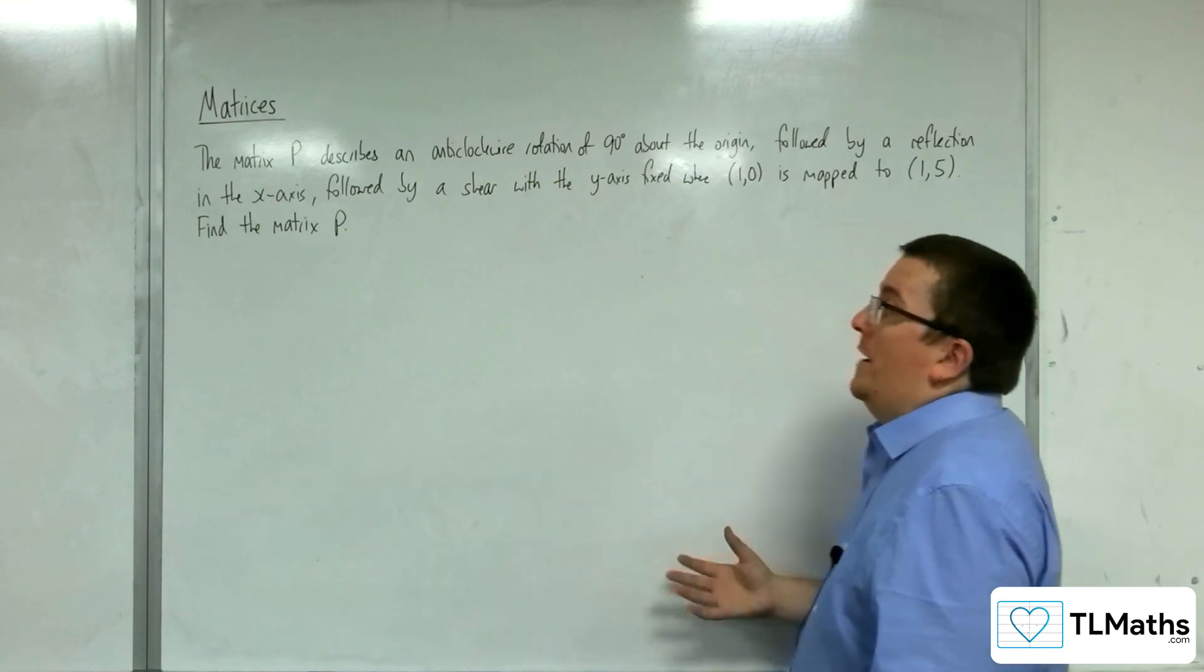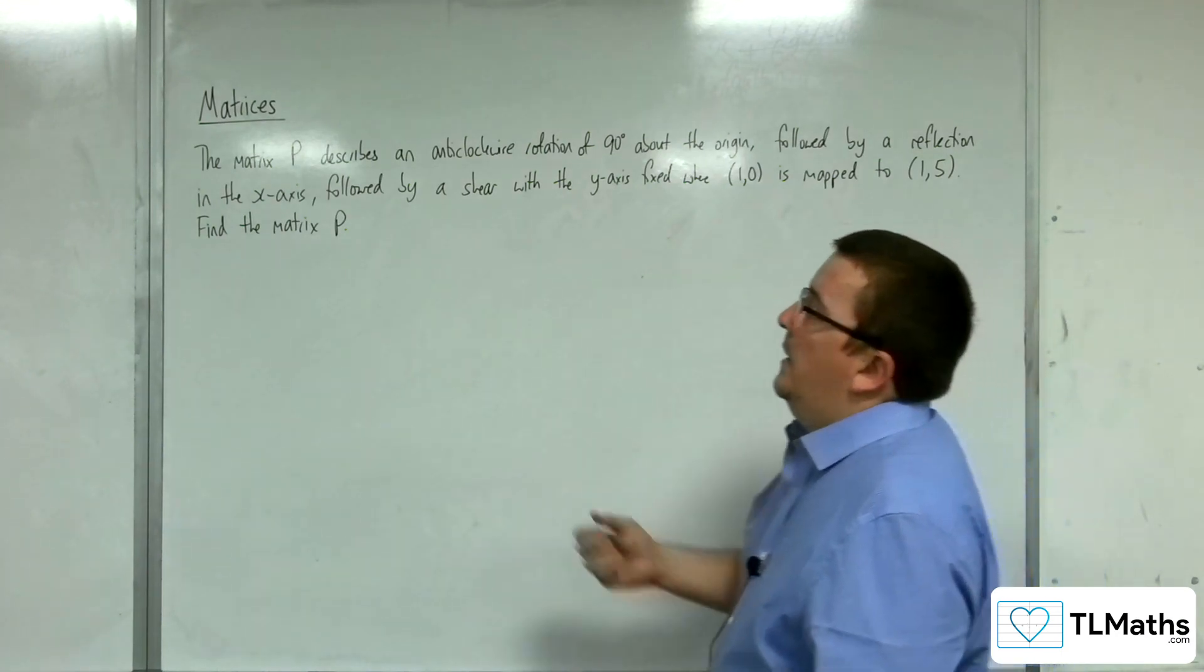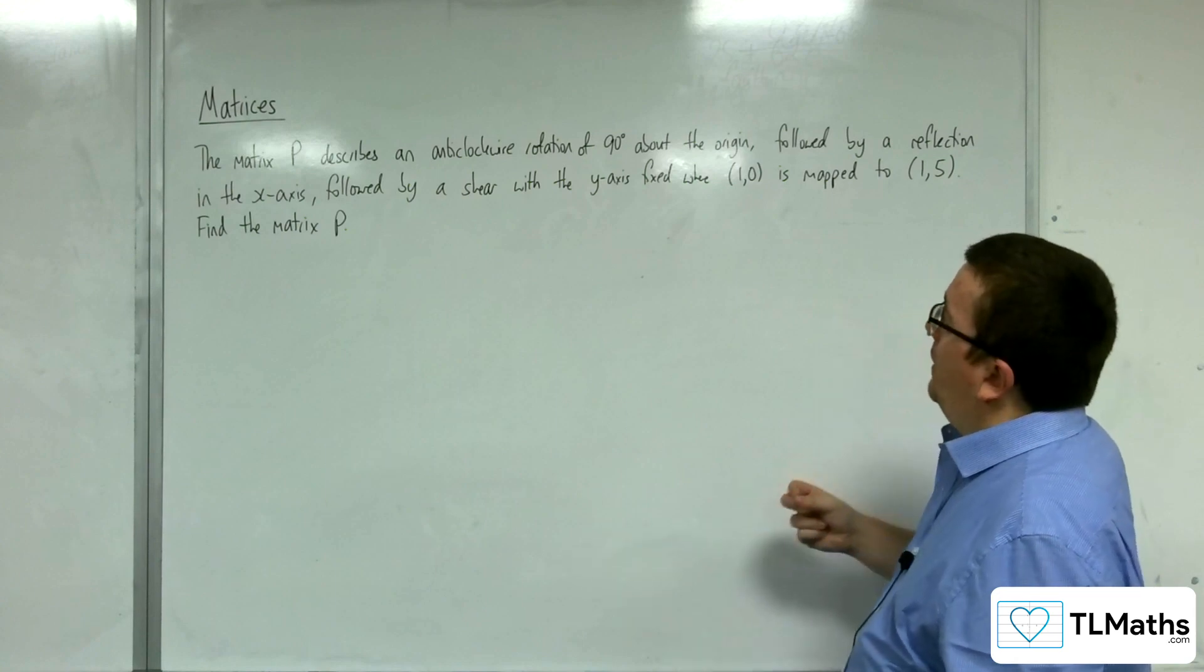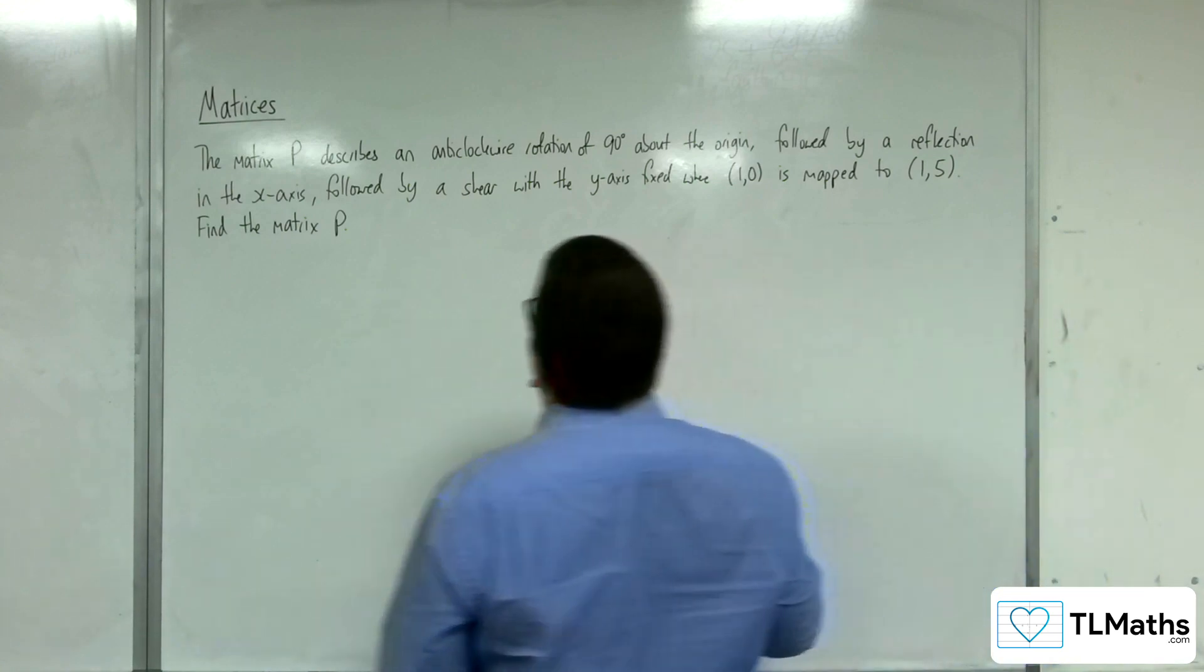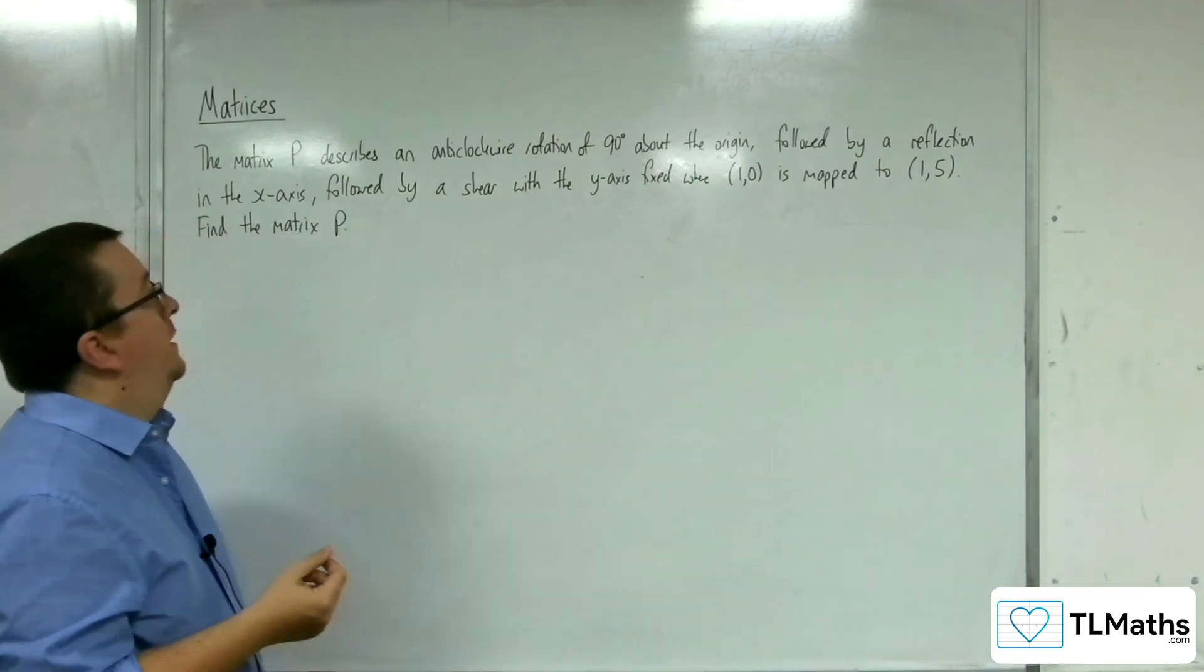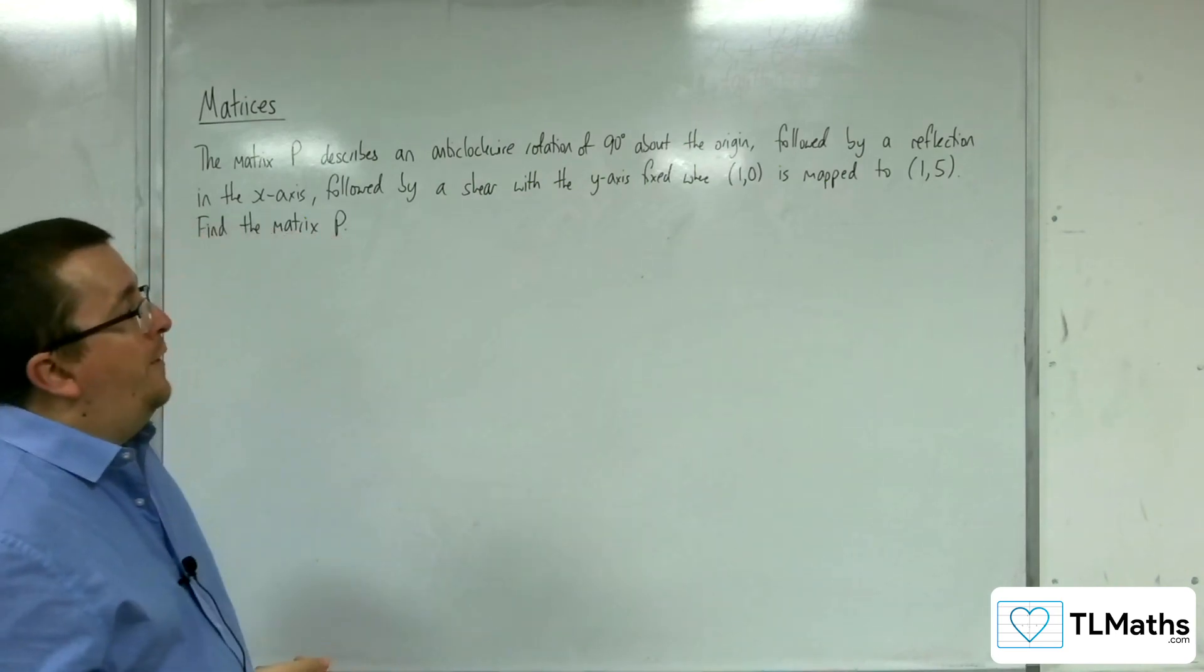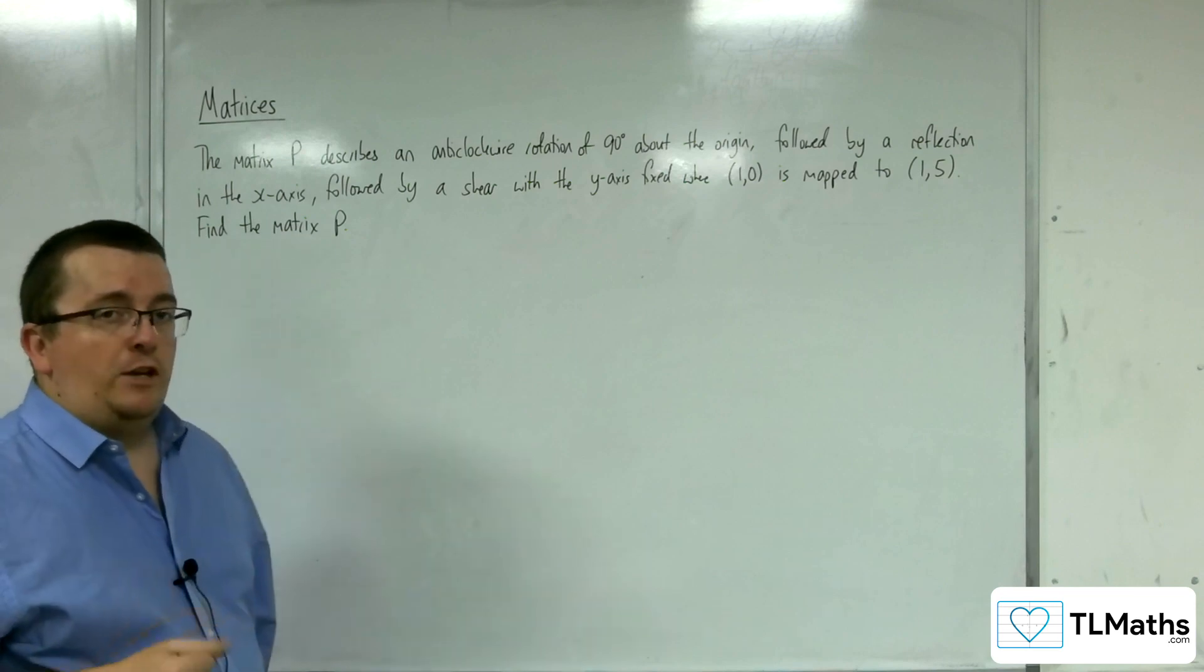Okay, so in this problem, we have the matrix P, which describes an anti-clockwise rotation of 90 degrees about the origin, followed by a reflection in the x-axis, followed by a shear with the y-axis fixed, where 1-0 is mapped to 1-5. Find the matrix P.